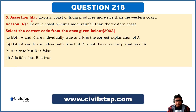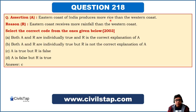The next question is an assertion-reason type. Assertion: eastern coast of India produces more rice than the western coast. Reason: eastern coast receives more rainfall than the western coast. The reason is straightforwardly wrong — western coast of India receives much more rainfall than the eastern coast; in fact, northeast India and the western coast get the highest rainfall in India. So reason R is false, making the answer option C — A is true but R is false. The true reason for more rice on the eastern coast is that the soil is more fertile (alluvial), and more rivers flow toward the eastern coast providing better irrigation facilities.